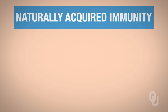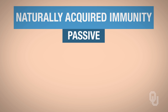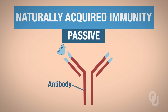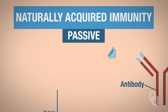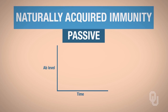We'll begin with naturally acquired immunity, looking at the passive form first. Mom gets exposed to the invader — think of the invader as the antigen — and then mom produces antibodies to that antigen. When mom gives birth to you, she passes her antibodies on to you, the newborn child. Illustrate on the graph below how you think the level of antibody would change in the newborn over time. Pause the video if you'd like more time to think about it.